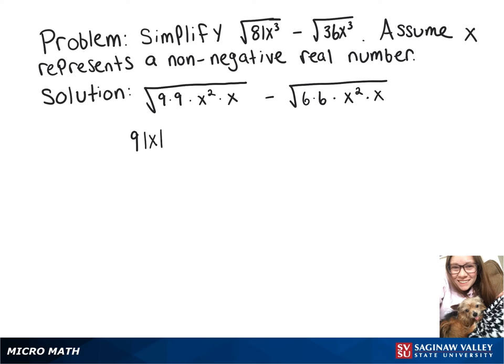Square root of x squared, the radical cancels out the square, so we can pull out that x, and then we still have an x underneath the radical. Same thing over here, square root of 36 is 6. Square root of x squared is x, and then we still have another x underneath the radical.